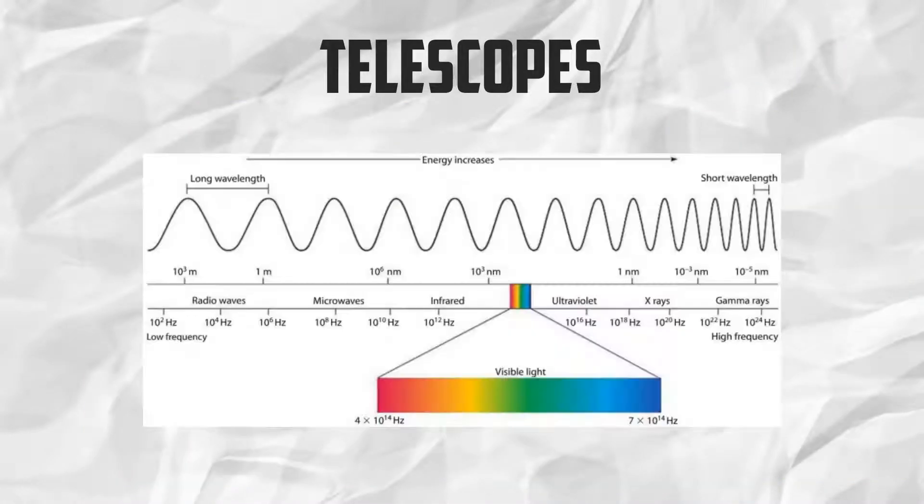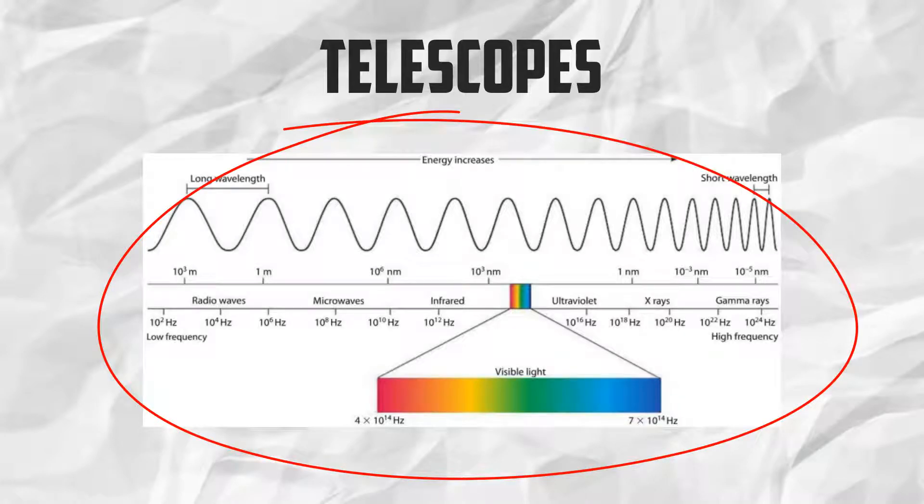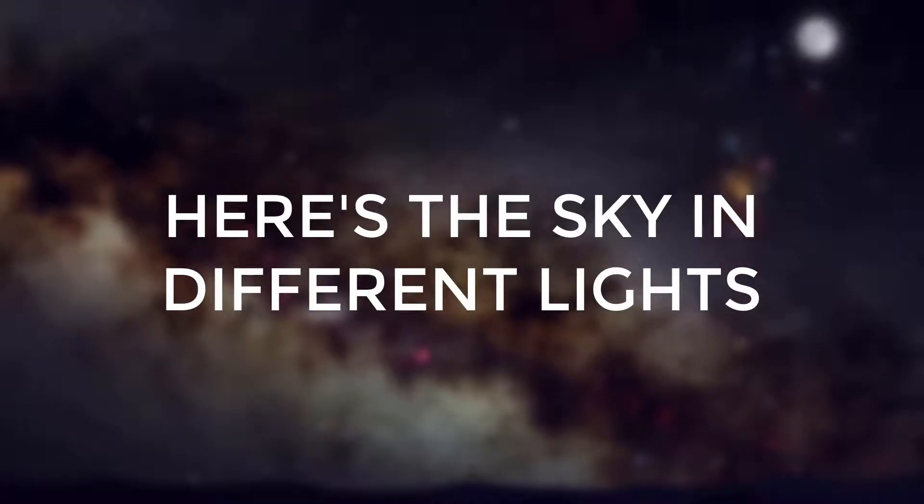With our advanced telescopes, we could see light that our own eyes cannot see. Here's what the sky would look like in different types of lights.